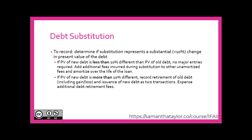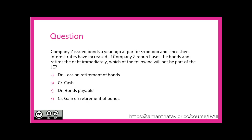However, if it is substantially different — more than 10% — essentially you're getting a new loan. Substance over form says this is a new loan regardless of what the bankers try to call it. So when you get a new loan, you have to retire the old one according to the methods we just discussed, and then you would record a new one, as we covered in a previous topic.